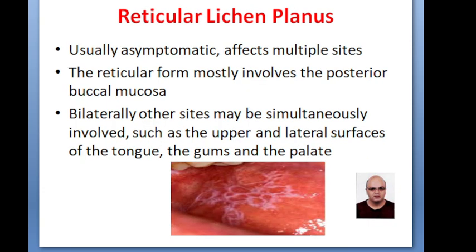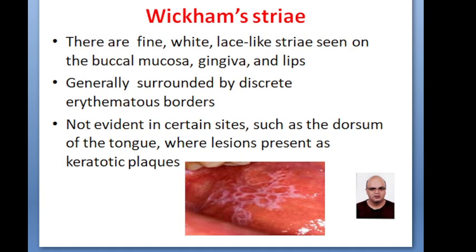Reticular Lichen Planus is mostly asymptomatic. It involves multiple sites, e.g., buccal mucosa, tongue, gums, and palate. It presents as fine white lace-like striae seen on the buccal mucosa, gingiva, and lips. Generally, these are surrounded by discrete erythematous borders.